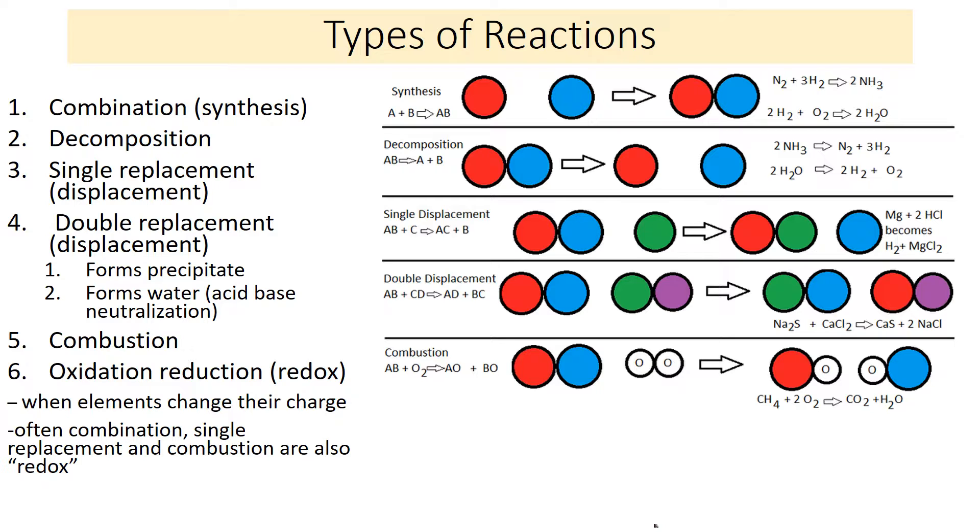So the first type is combination or synthesis and that's when two small compounds or two elements combine to form one. You recognize it because there's only one product. Decomposition is the reverse of that. You start with one reactant and it breaks down into two or more simpler molecules or it could be elements. So synthesis you have one product, decomposition you have one reactant.